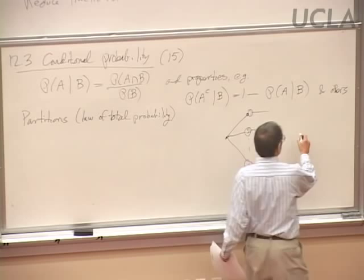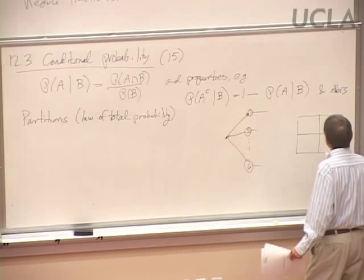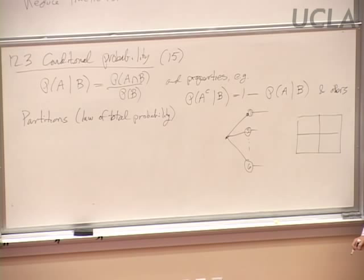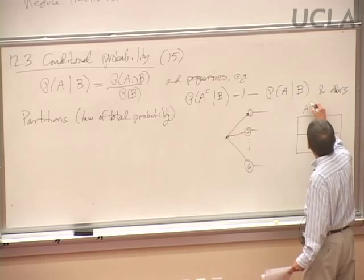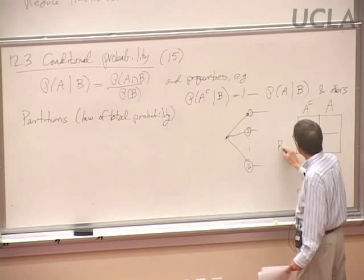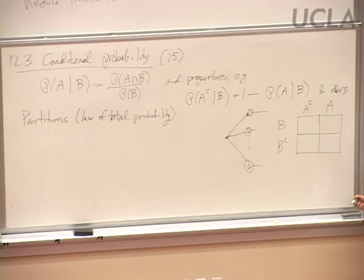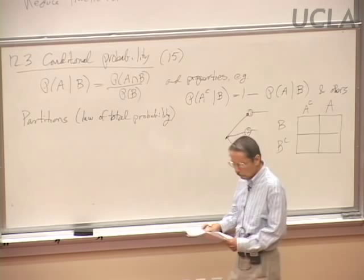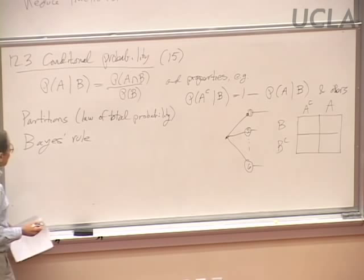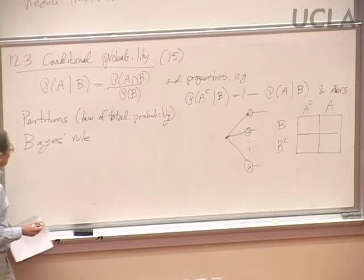That's what the law of total probability says. Sometimes it's been useful to organize things in terms of a box showing the various things that could happen — event A could either not happen or happen, event B either doesn't happen or it does, and then we fill in the various combinations. Bayes' rule has come up in a number of problems.